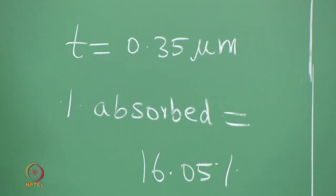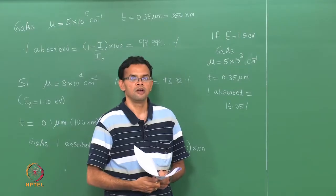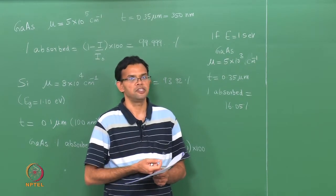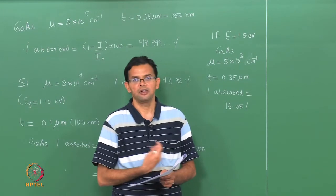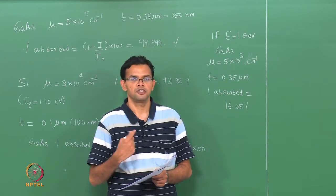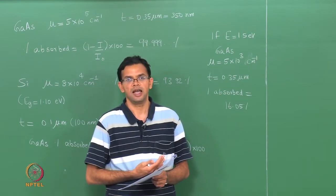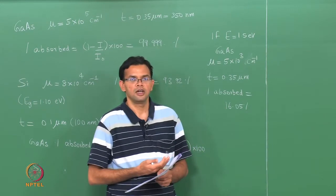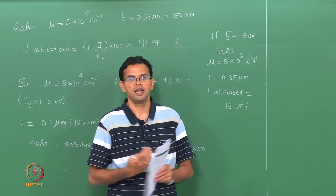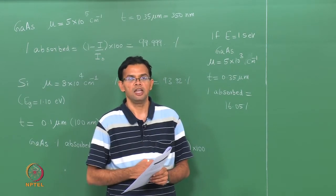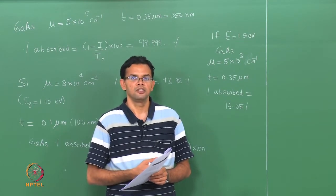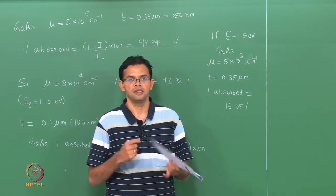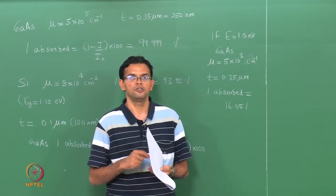So nearly 84% of the light is transmitted while the rest is absorbed. The absorption coefficient μ plays a really key role in determining the thickness of the sample needed in order to either let light pass through or have it absorbed. The value of μ at different wavelengths determines the type of material you would choose and also the required thickness.